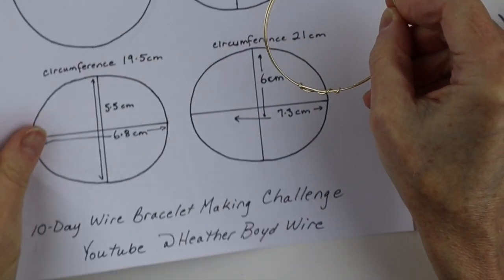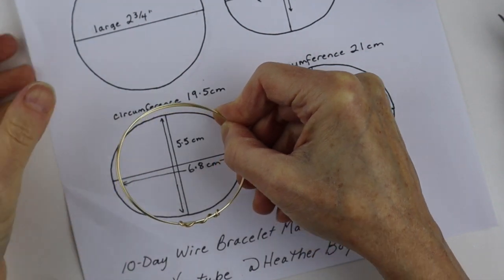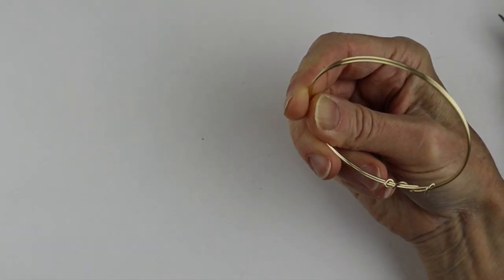And you want always your ends to be pushed in flush so that they're not going to be catching on anything and they're not going to be like pokey or anything. So now you can just kind of adjust it how you want. If you do want the oval shape, just go ahead and form it more into an oval shape. But if you want round, round is good too.